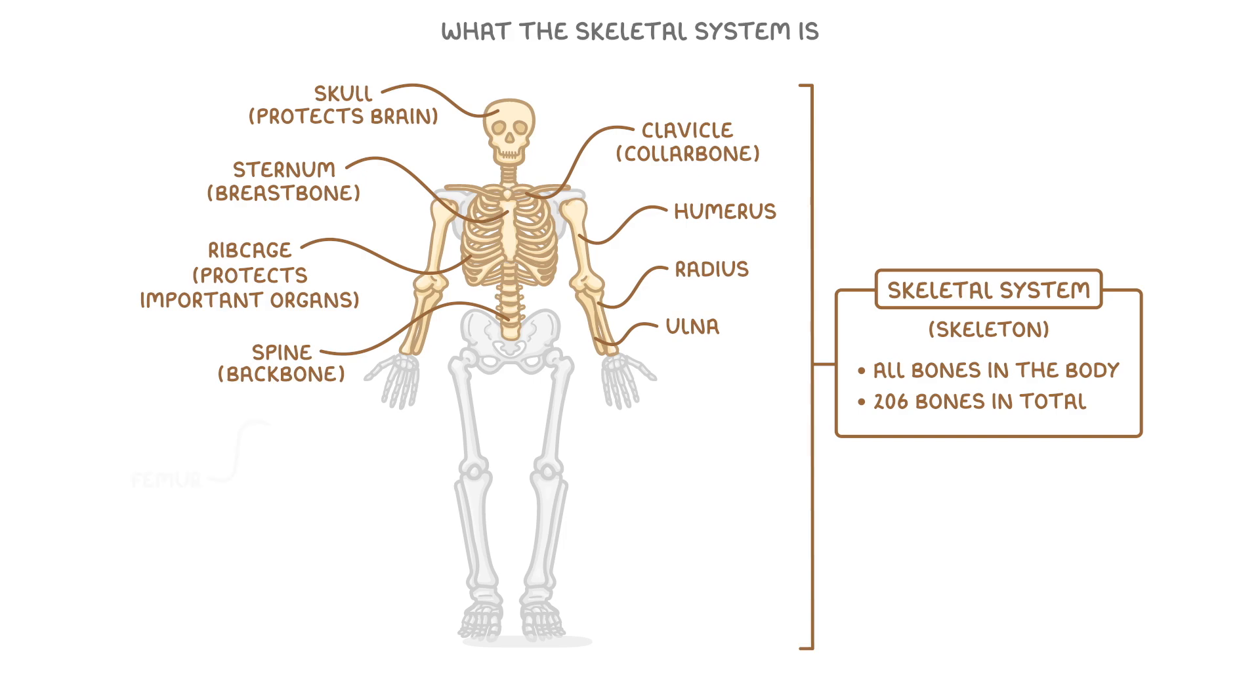There's one big bone in your upper leg called the femur. This is connected to the bones in your lower leg by this small bone called the patella. You might know this bone better as the kneecap though. Then in the lower leg there are two bones. The larger one is called the tibia and the smaller one is called the fibula. Along with the muscles they're connected to, these bones let us walk, run and jump with coordinated movements.